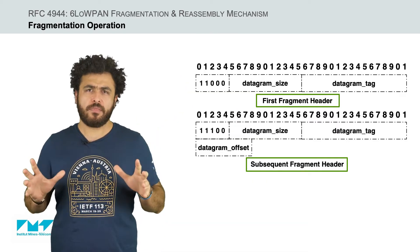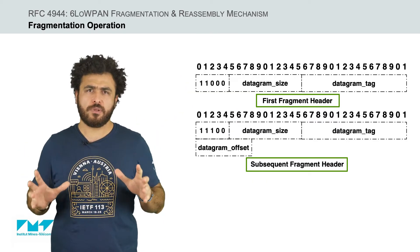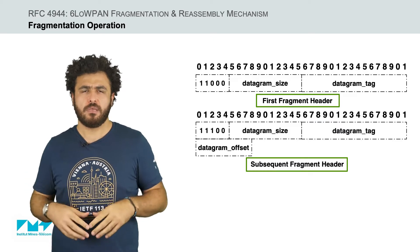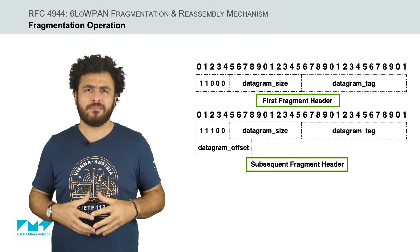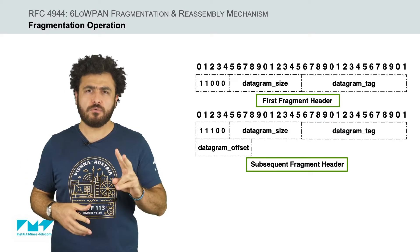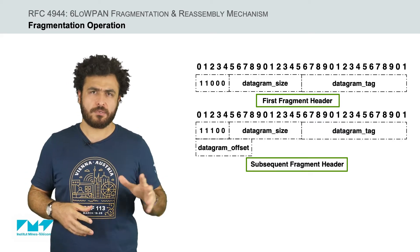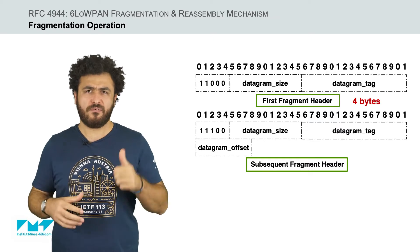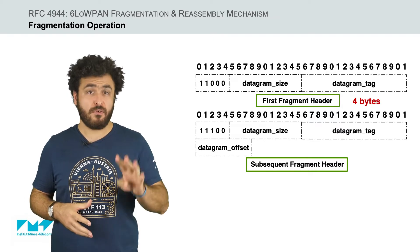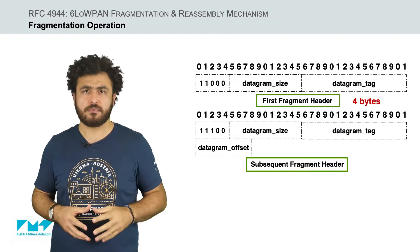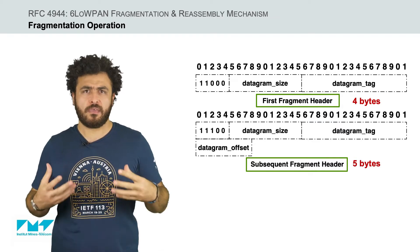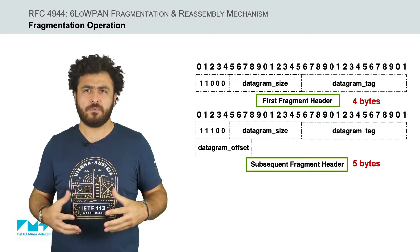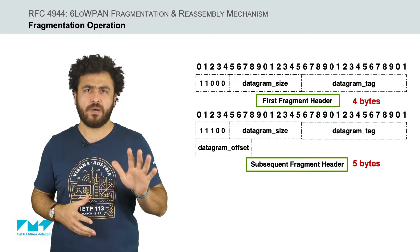To enable the fragmentation and reassembly operations, 6LoWPAN defines two fragment headers, where the header for the first fragment consists of 4 bytes, while the header for the subsequent fragments consists of 5 bytes.